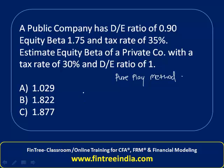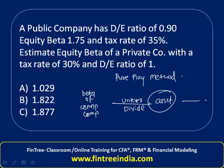We start with the beta of the comparable company. First, we unlever this beta by dividing to get the asset beta. Once we have the asset beta, we relever it by multiplying using our own debt-equity ratio, so that we get the equity beta of the private company.